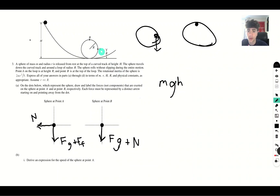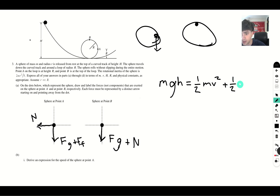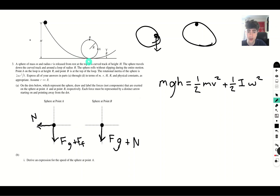At point A, the energy includes translational kinetic energy (one-half mv squared), rotational kinetic energy (one-half I omega squared), and some potential energy due to gravity because we are not yet at the ground — we're at height r above the bottom. So we add potential energy mgr.